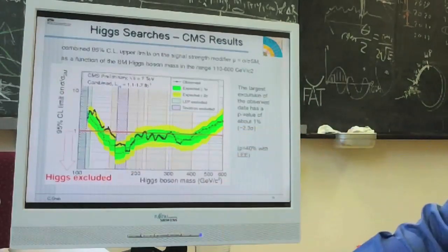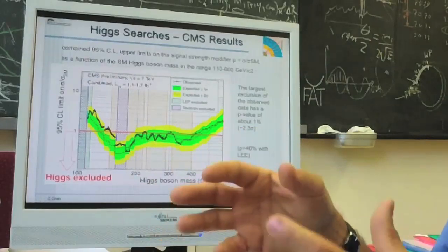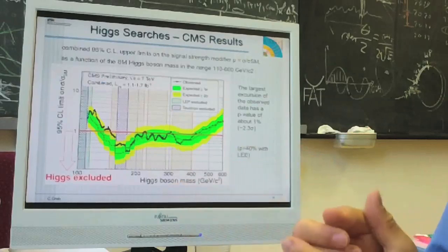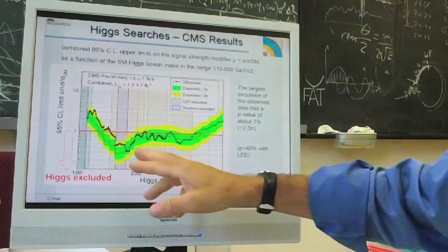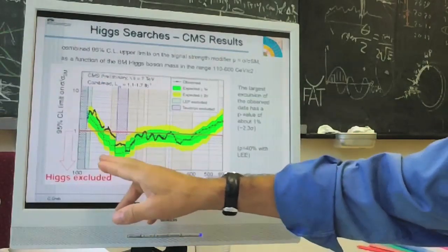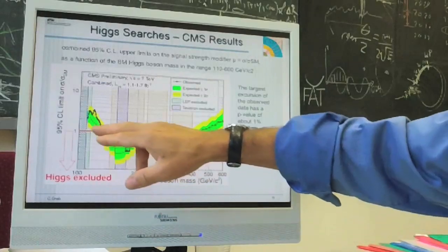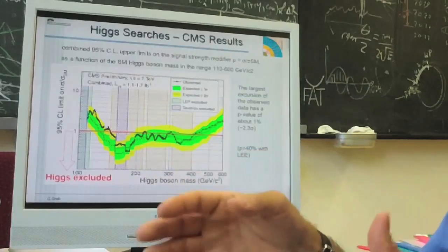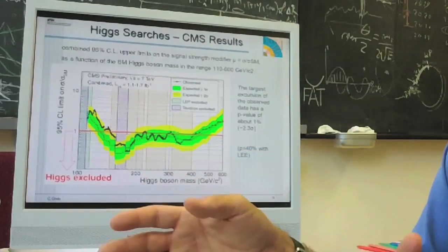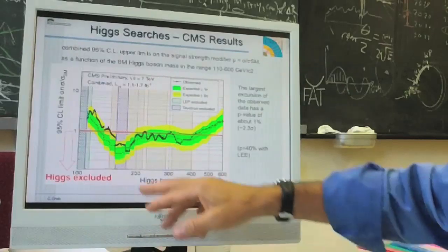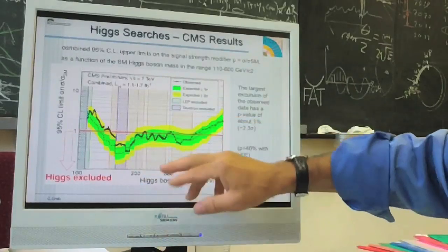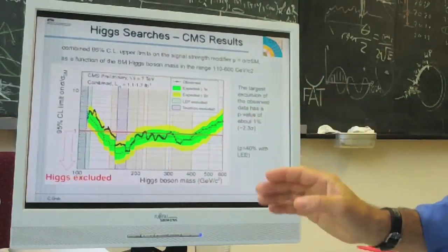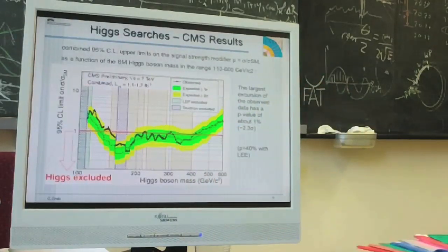And the red line indicates where we would expect the Higgs to come in, in terms of rate, if the standard model were true as we know it. Since we have not seen it, we can exclude certain ranges. In this case, just basically all the ranges which are below the red line. That is a range in mass where we can say with 95% confidence level that the Higgs is not there. So these have been measured, and you see this is a zigzag line. So various regions have been excluded. But there are still windows left and right where the Higgs could be.